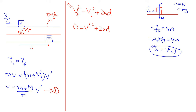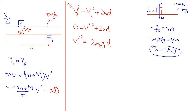Substituting into the kinematic equation, we get v prime squared equals 2 mu_k times g times d. Therefore, v prime equals the square root of 2 times mu_k times g times d. This is equation two.